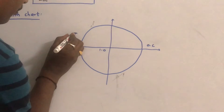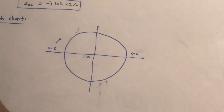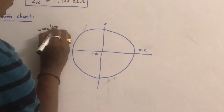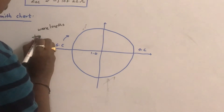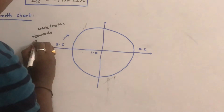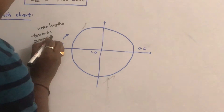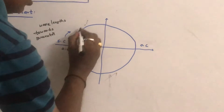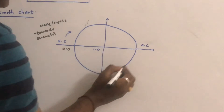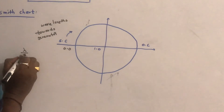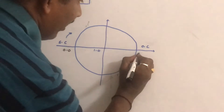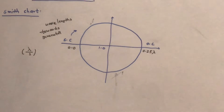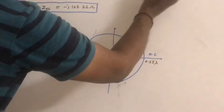This direction indicates wavelengths towards the generator. The point here is 0.0, and the total circumference of the Smith chart is lambda by 2. So this point is 0.25 lambda. This is from the open circuit end towards the generator.